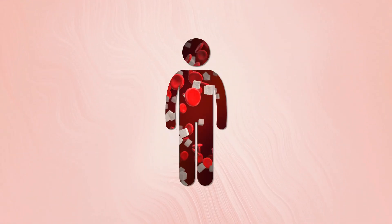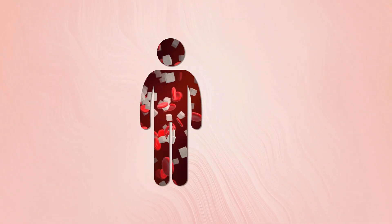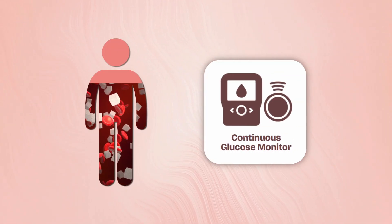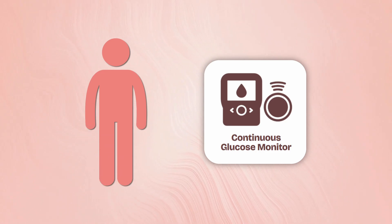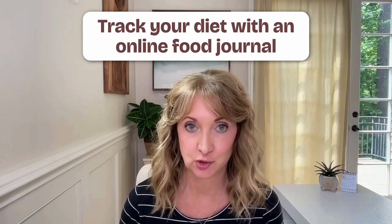If you have elevated blood sugar or prediabetes, one of the best things you can do to reverse the condition is to use a continuous glucose monitor. The Dexcom Stello is a CGM I recommend the most in my practice. The second best thing you can do is to track your diet with an online food journal, and Cronometer is one of the best nutrition tracking apps available.